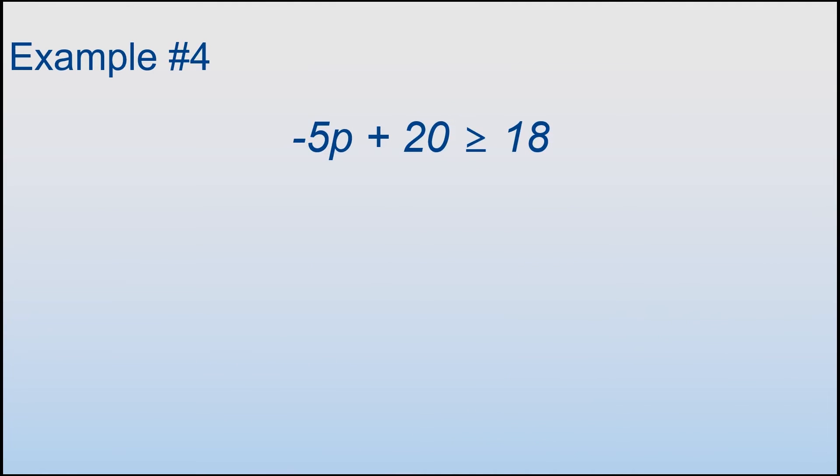Example number 4. I'm going to subtract 20 on both sides. This cancels. -5p ≥ -2. If I have 18 and I take 20 away, I'm going to end up with -2.